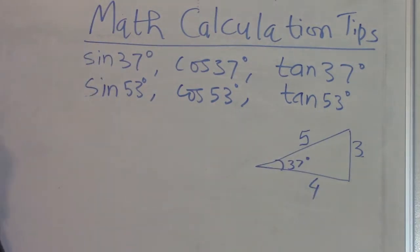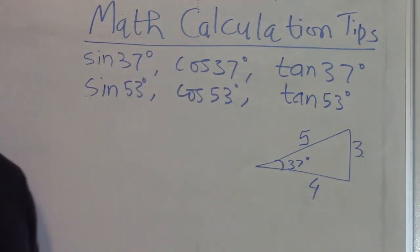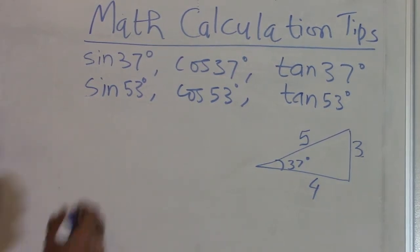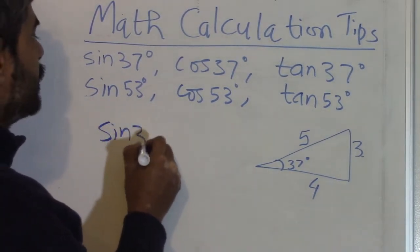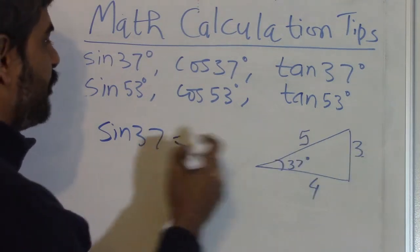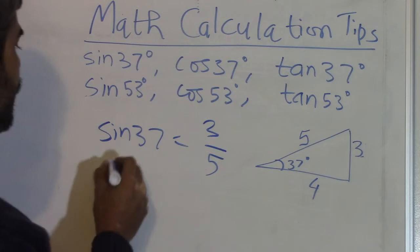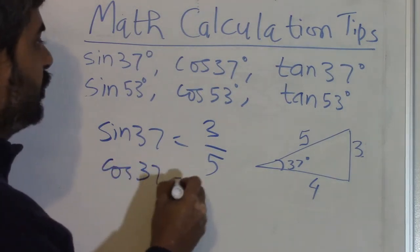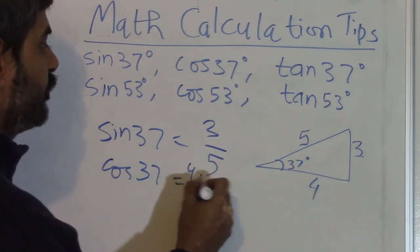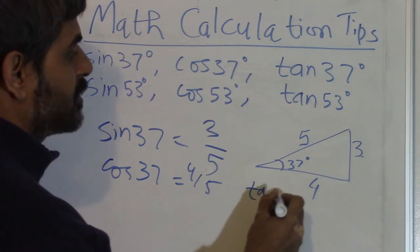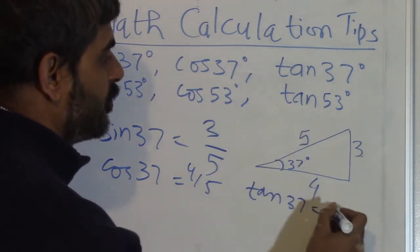And now you can write any value that you want. For 37 degrees, you can write sin 37° as 3 by 5, and then cos 37° will be equal to 4 by 5, and then tan 37° will be equal to 3 by 4.